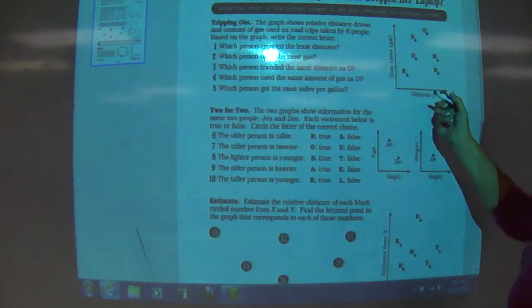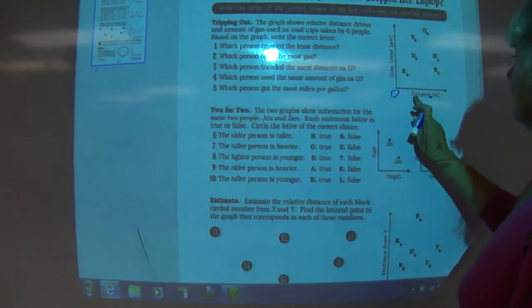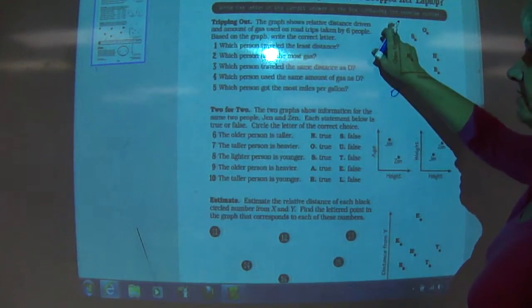Based on the graph, write the correct letter. So we know this is zero. Here's distances, here's gas used.